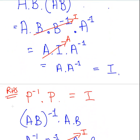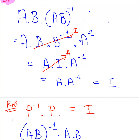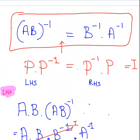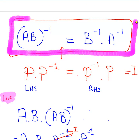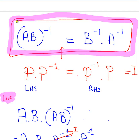So the left-hand side equals the right-hand side, and that is only possible because the statement is true. If it were not true, we would not have obtained the identity matrix on both sides — we might have got one but not the other. We only got the identity matrix for both the left-hand side and the right-hand side because the statement holds.